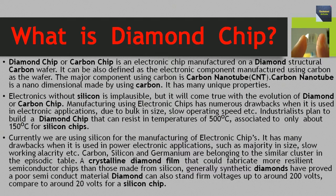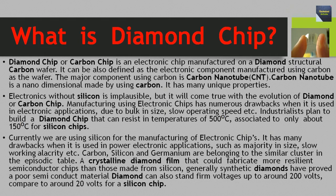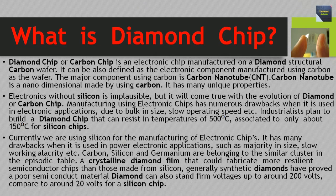First, we should know what is a diamond chip. Diamond chip or carbon chip is an electronic chip manufactured on a diamond structural carbon wafer. It can also be defined as the electronic component manufactured using carbon as the wafer. The major component using carbon is the carbon nanotube, also known as CNT. Carbon nanotube is a nano-dimensional structure made using carbon and has many unique properties.